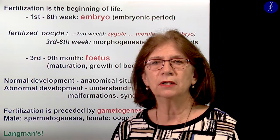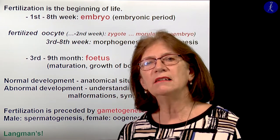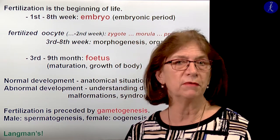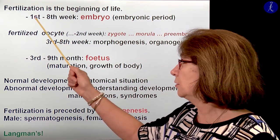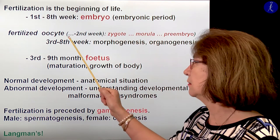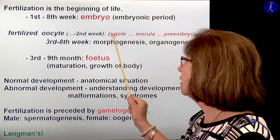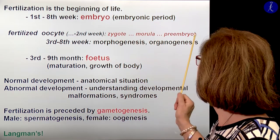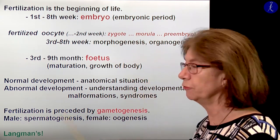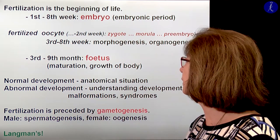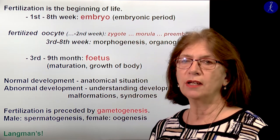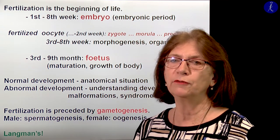Today we will talk about gametogenesis, and I will also give you a little introduction into embryology. The fertilization is the beginning of life. The first eight-week period is called the embryonic period. The fertilized oocyte — until the end of the second week — is first called the zygote, then we get the morula, and then we get the pre-embryo or blastocyst. Sometimes the term zygote is used in an extended way for the first two weeks. The third to the eighth week is the period when morphogenesis and organogenesis happen, so the organs are established in that period of human embryo development.